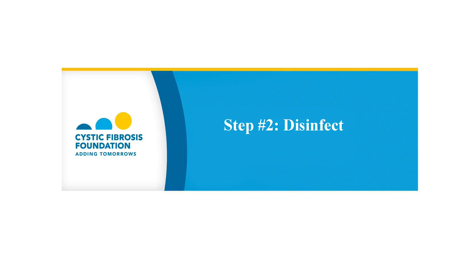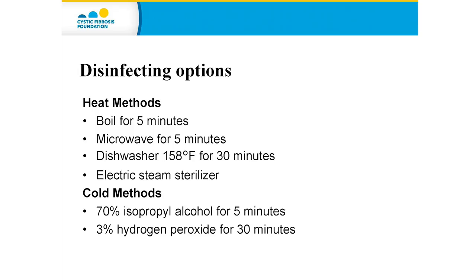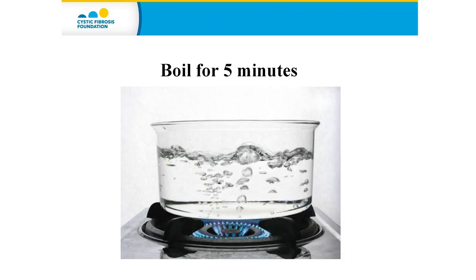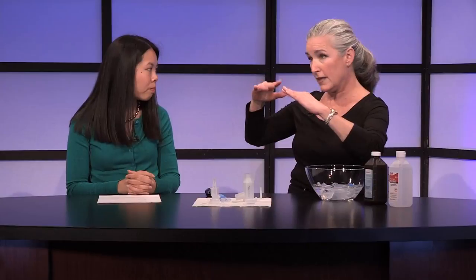The second step is to disinfect the nebulizer parts. There are several options recommended by the Cystic Fibrosis Foundation. There are heat methods and cold methods. Let's review the heat methods first. Boiling: bring a pot of water to a boil and boil the parts for a full five minutes. You want to achieve a rolling boil and complete that for five minutes, and then the nebulizer is disinfected.